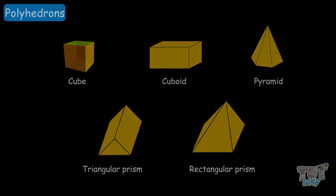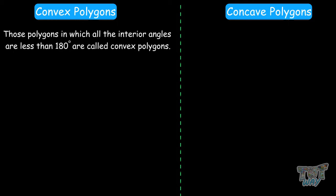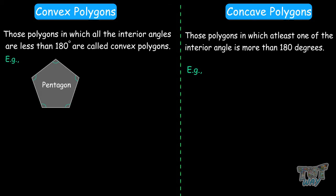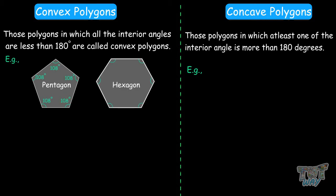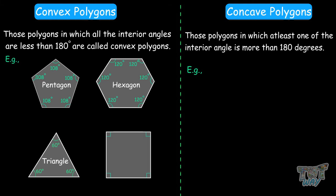Now let's learn what are convex polyhedrons and what are concave polyhedrons. Before that, we'll learn what are convex polygons and concave polygons. Convex polygons are polygons in which all the interior angles are less than 180 degrees. Concave polygons are polygons in which one or more interior angles are more than 180 degrees. For example, a pentagon is a convex polygon because all the angles are 108 degrees. Another example is the hexagon, where angles are 120 degrees, and a triangle, where angles are 60 degrees, and a square, where the angles measure 90 degrees.